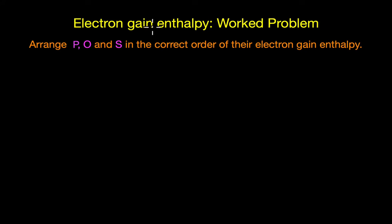Let's solve a few questions on electron gain enthalpy. Now the first question says, arrange phosphorus, oxygen and sulphur in the correct order of their electron gain enthalpies.